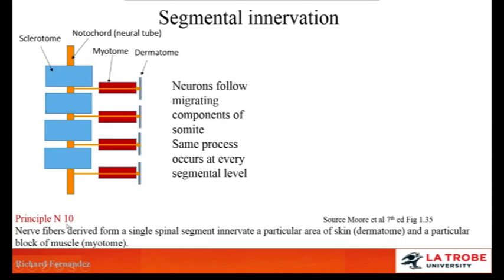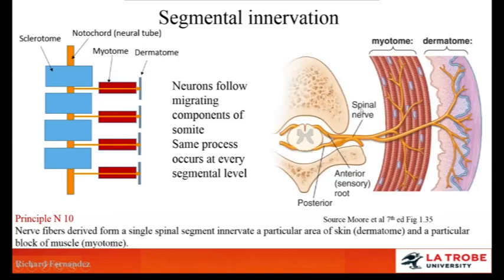We can now review Principle N10, which indicates that nerve fibres derived from a single spinal segment innervate a particular area of skin — the dermatome — and a particular block of muscle — the myotome. In a fully formed vertebra, muscle, and skin group, the spinal nerve is not only innervating the group of muscle, the myotome, but also the overlying skin — the dermatome.